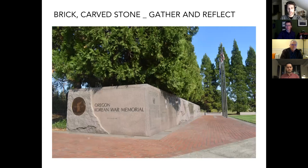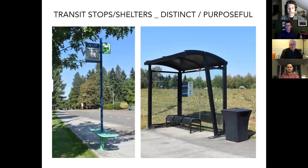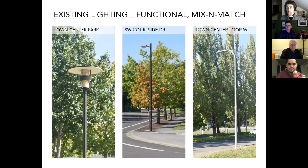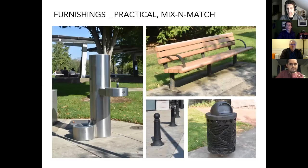A few things going on in the town center that we want to build upon: the use of brick and carved stone to help define places for gathering and reflection; acknowledging that the town center is a significant transit location, so how do we factor in shelters and bus stops? How do we bring more uniformity to the street lights — there are at least three different types — and unify and bring coherence to features like benches, trash cans, and water fountains? How do we tie that together and create a consistent aesthetic that connects streets to parks?